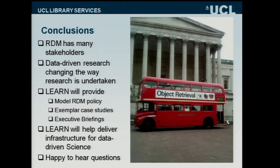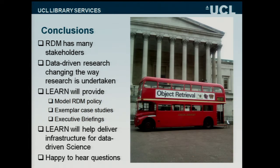To conclude: research data management has many stakeholders, and a data-driven research framework will change the way researchers undertake research and share and disseminate it. The challenge for LEARN is to provide parts of the infrastructure that will feed that change — in particular, the model research data management policy, the exemplar case studies and best practice toolkit, and high-level executive briefings for decision-makers to get institutions, learned societies, and research funders actively involved in deciding what their role is in the research data management space. Thank you for listening, and I'm very happy to answer any questions.